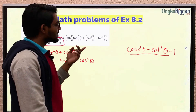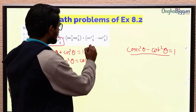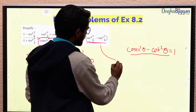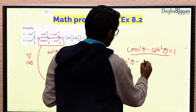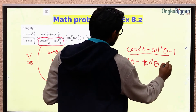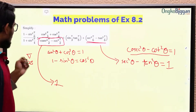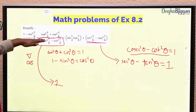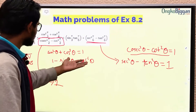Similarly, we have another part where we can replace the whole thing by one, because we know that sec²θ minus tan²θ equals one. So I should start by replacing them with the easier values — that is, one, one, and cos²θ.